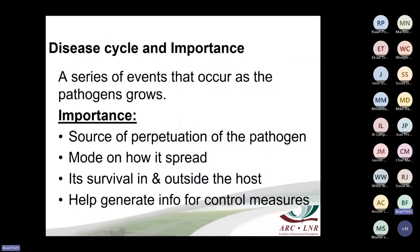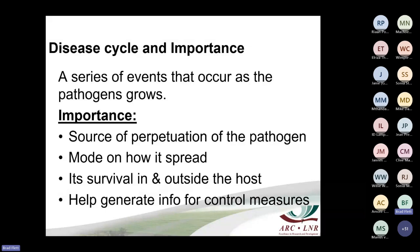The disease cycle is important because it is a series of events that occur as the pathogen grows. It explains the source of perpetuation of the pathogen — the inoculum — the mode of spread, whether by wind, air, or mechanical damage, and its survival in and outside the host. Understanding the disease cycle helps generate information for the implementation of control measures.